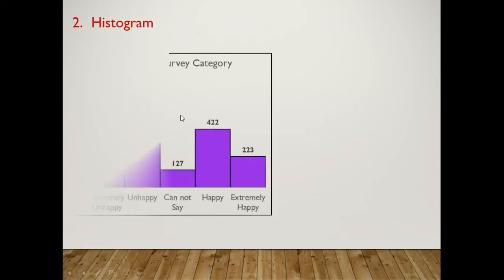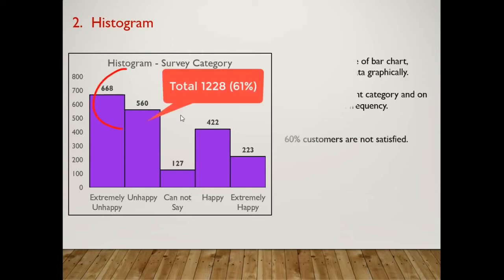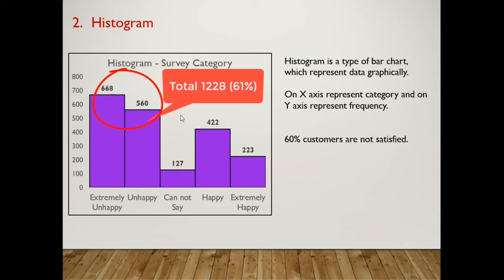For better understanding and graphical presentation of this data, here we use a Histogram. By analyzing the Histogram, management identifies that more than 60% of customers are not satisfied with their products. For this, management decides to resurvey only those 60% of customers who are not satisfied, to know the reasons.